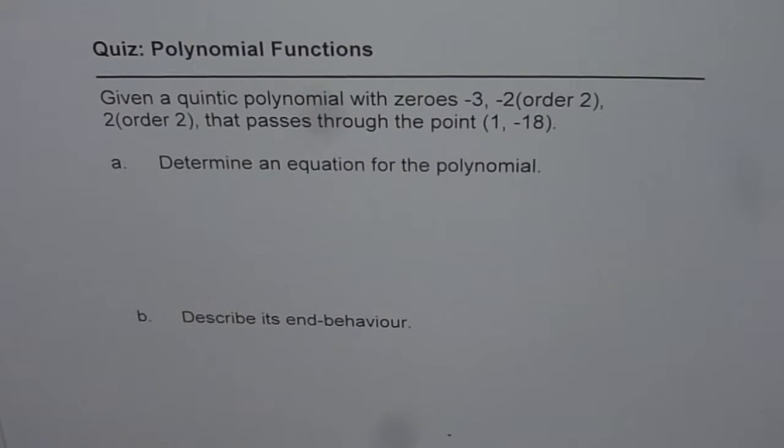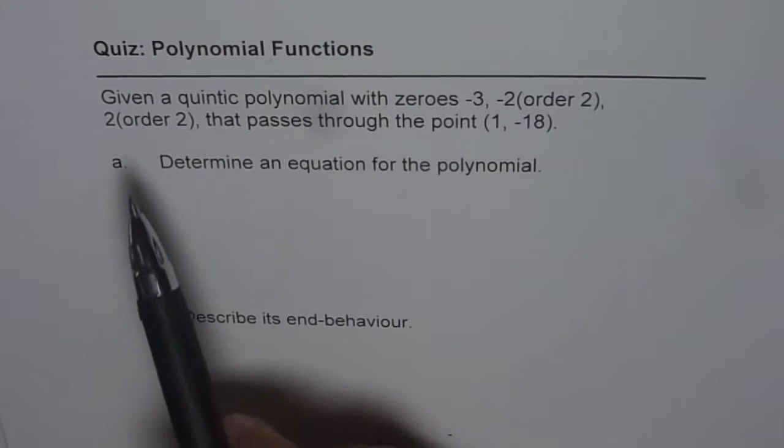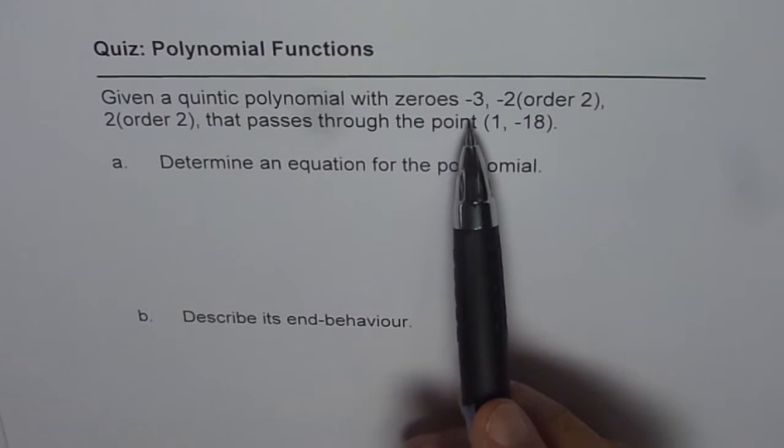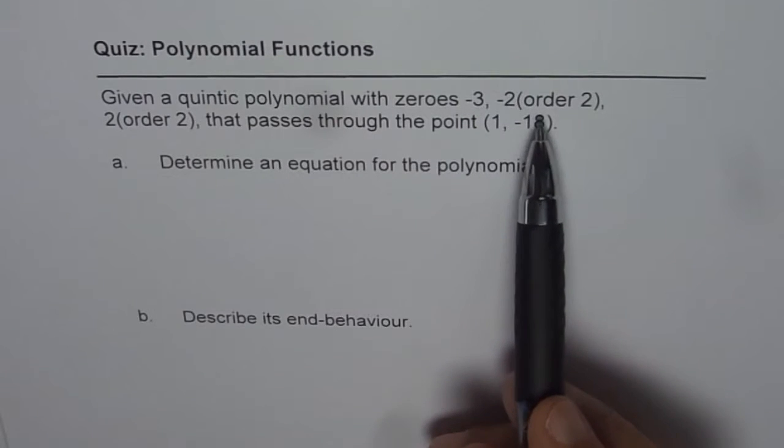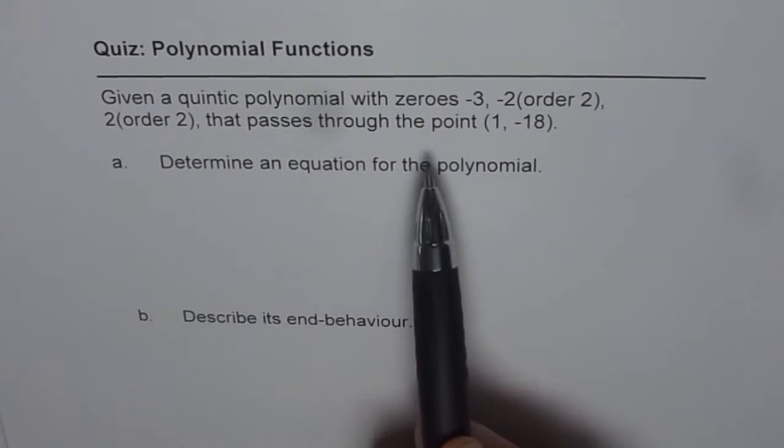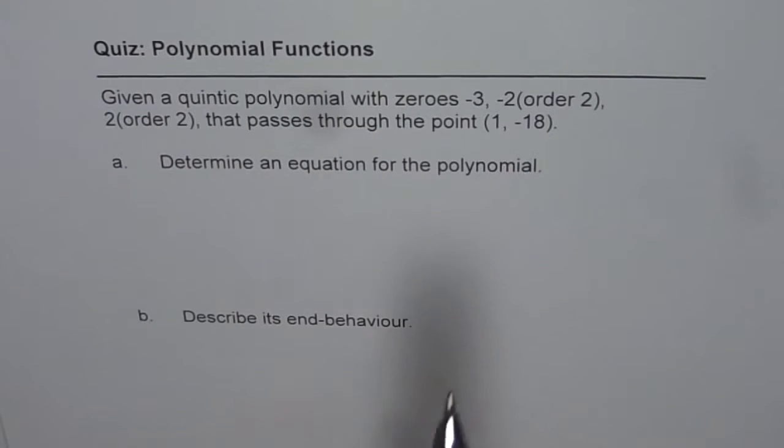Let us practice for the quiz on polynomial functions. The question is, given a quintic polynomial with zeros minus 3, minus 2 of order 2, 2 of order 2, that passes through the point (1, -18).